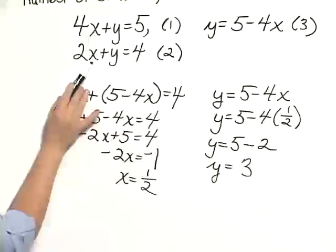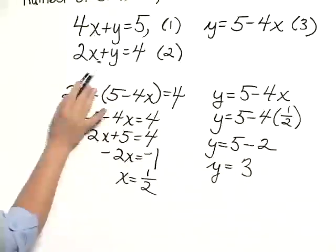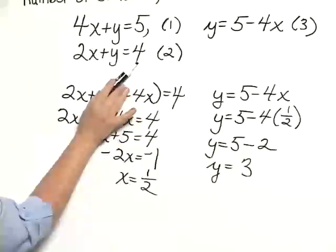In the second equation, 2 times 1 half is 1, 1 plus 3 is 4. It checks in the second equation.